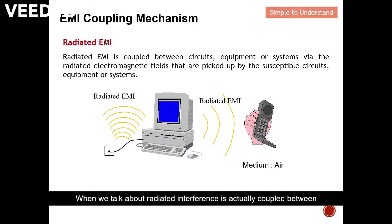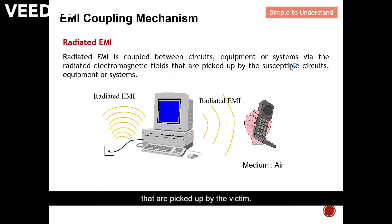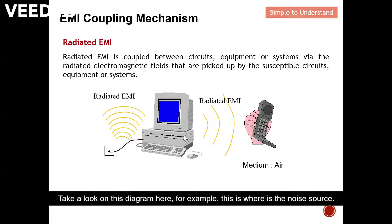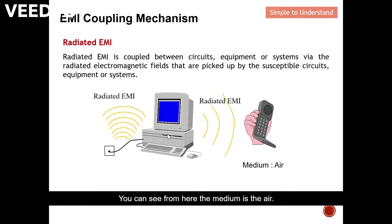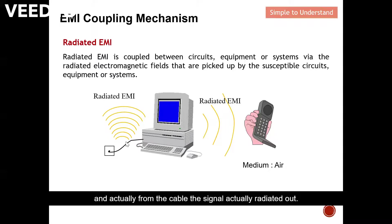Radiated interference is coupled between circuits, equipment, or systems via radiated electromagnetic fields picked up by the victim. For example, a noise source radiates interference through the air — the medium is air. Another scenario is where the noise source travels along a cable, and from the cable the signal radiates out — this is also classified as radiated interference.